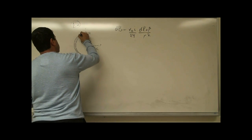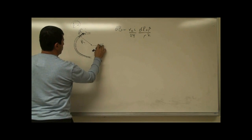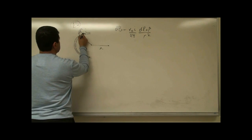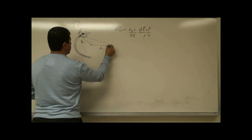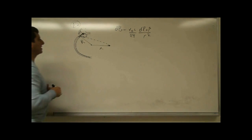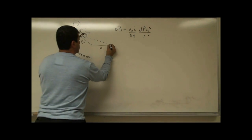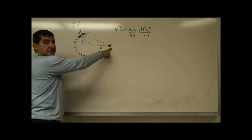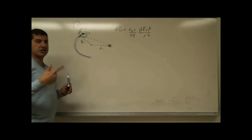We take a little piece of the current — that's dL. R-hat is a unit vector pointing toward the point where we want to find the magnetic field. When you do dL cross r-hat, it gives us into the board. All the elements are going to produce a magnetic field into the board — dL cross r-hat, dL cross r-hat — so they just keep adding up.